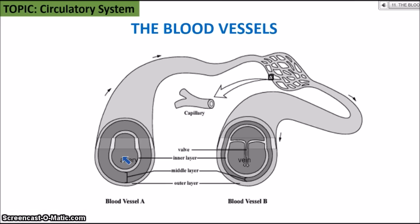Arteries do not need valves because high-pressured blood is more likely to flow in one direction only. In terms of the capillary — the smallest blood vessel — capillaries form networks and are known for the exchange of materials with tissues. This is where nutrients and oxygen are delivered to the cells of the tissues, and waste materials are returned to the blood. That is the purpose of capillaries: the exchange of materials.